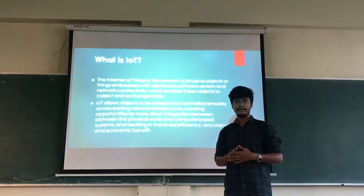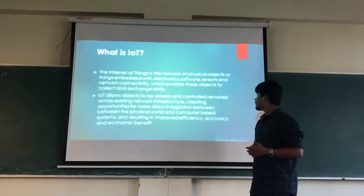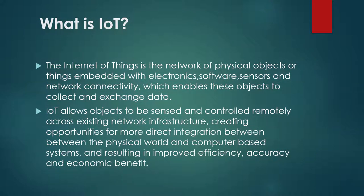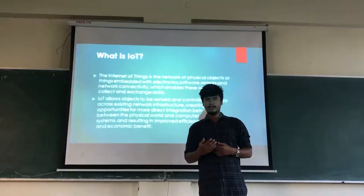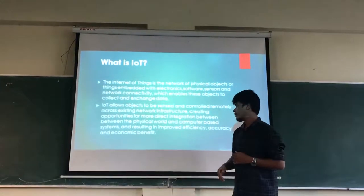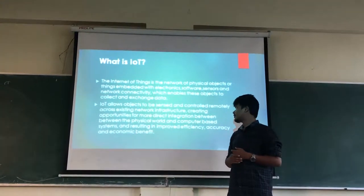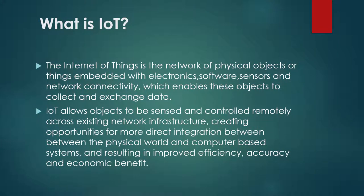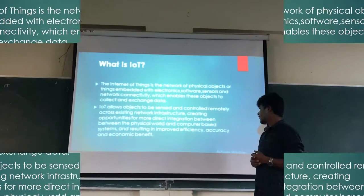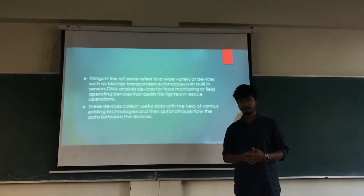So, what is IoT — the Internet of Things? The Internet of Things is the network of physical objects or things embedded with electronics, software, sensors, and network connectivity, which enables these objects to collect and exchange data. What we are trying to do is connect our daily household objects — like refrigerators, lights, air conditioners, etc. — in one similar network, so that they can exchange data among themselves. IoT allows objects to be sensed and controlled remotely across existing network infrastructure, creating opportunities for more direct integration between the physical world and computer-based systems, resulting in improved efficiency, accuracy, and economic benefit.